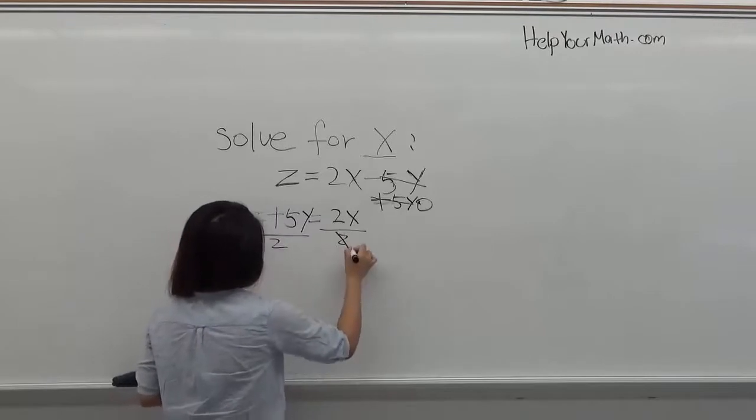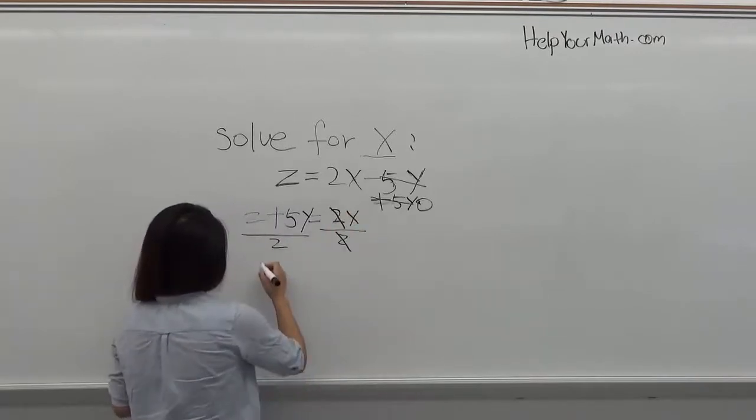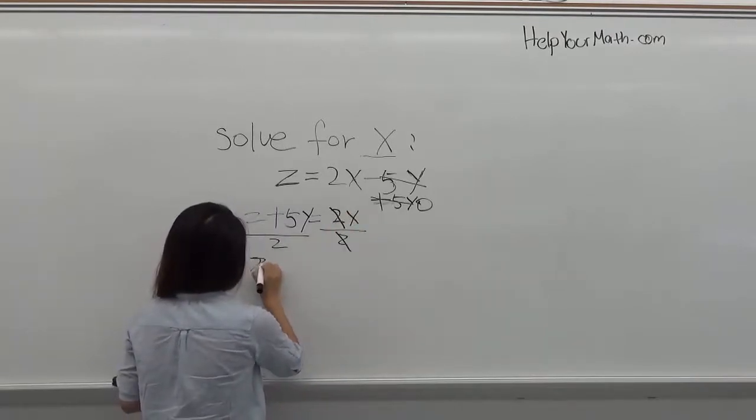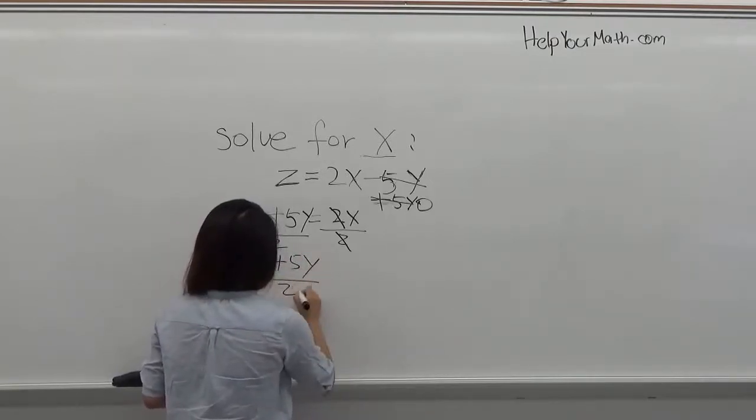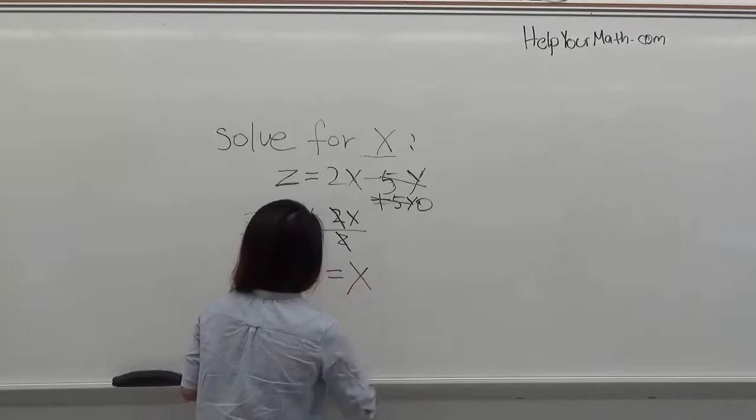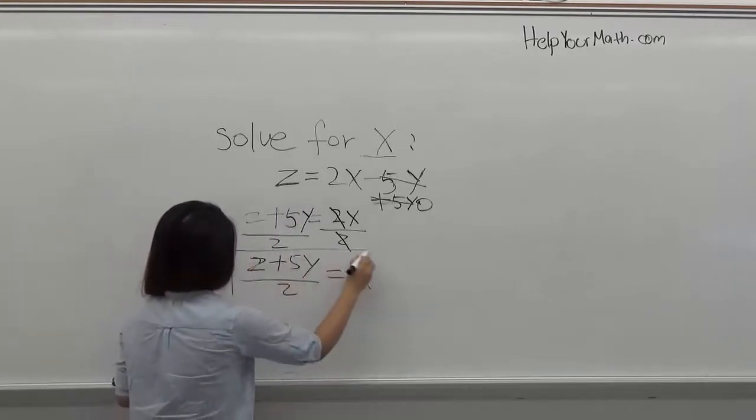So these two are going to cancel each other out. Then you get z plus 2y divided by 2 equals x. And this is the final answer for the problem.